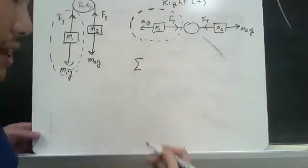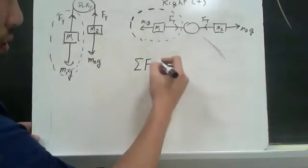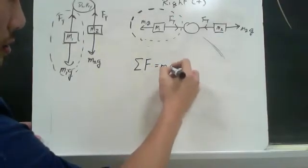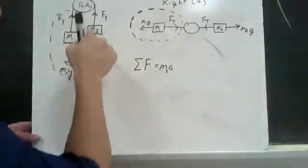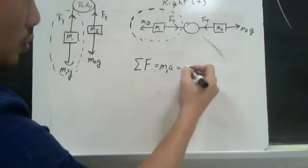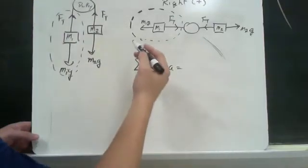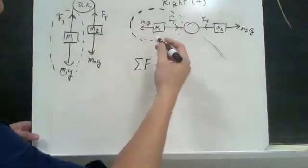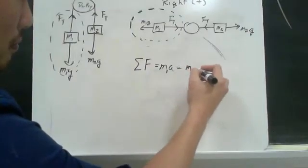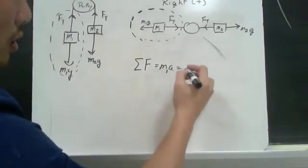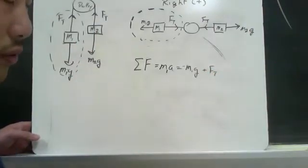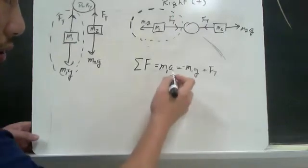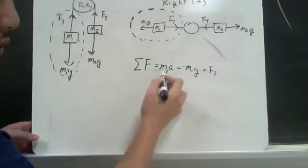So if I'm going to write a net force equation for my new system, it will be the sum of the forces is equal to mass times acceleration. And this time, we're only going to put one mass, M1, because that's our new system that we're looking at. It's equal to, remember, we said that anything going to the right will be positive. So that would be negative m1g plus f of t. And from the acceleration that you found before, you're going to plug that in here.